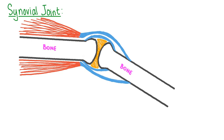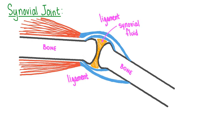This diagram shows a cross section of a simplified synovial joint. In yellow, we see the synovial cavity filled with synovial fluid, which is very slippery and lubricates the joints to reduce friction. The ends of the bones are also coated with a thin layer of articular cartilage, which also decreases friction within joints. The bones are attached to each other by fibrous organs called ligaments, which function to connect bones to other bones.